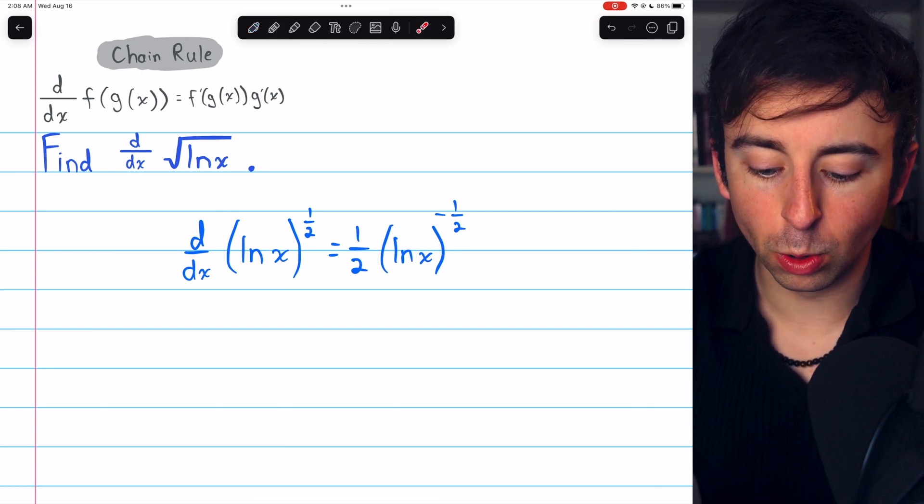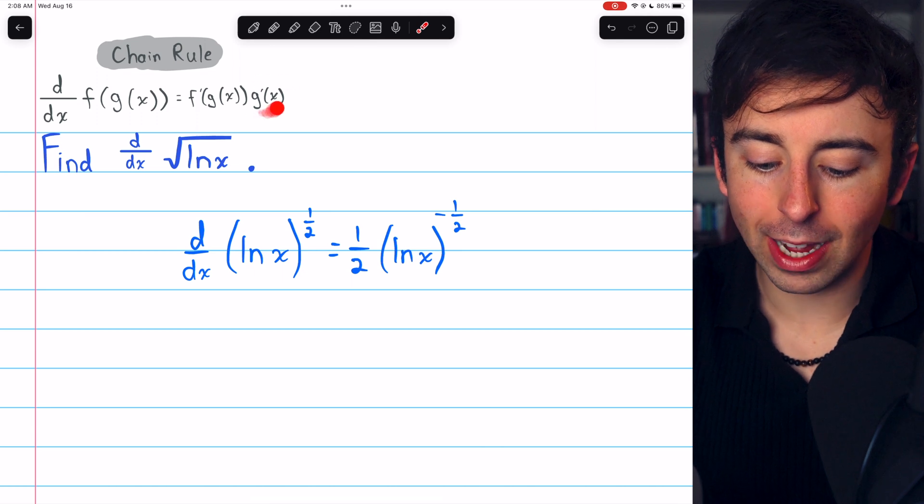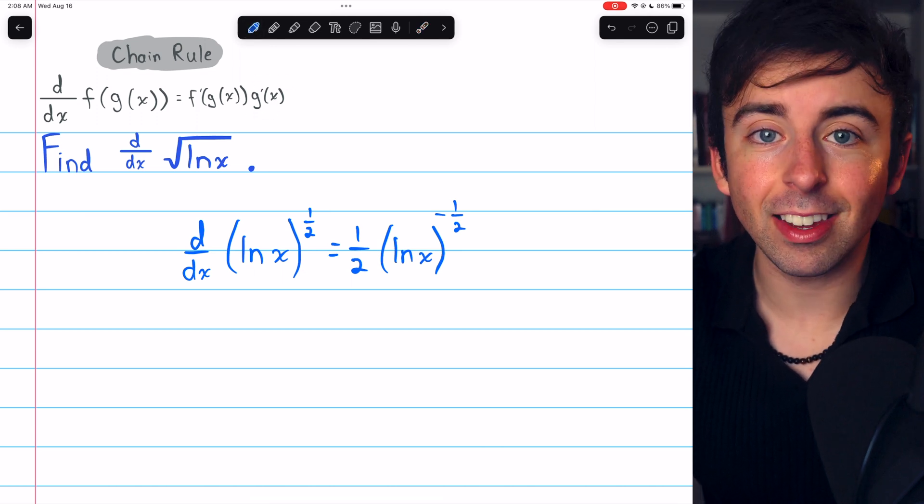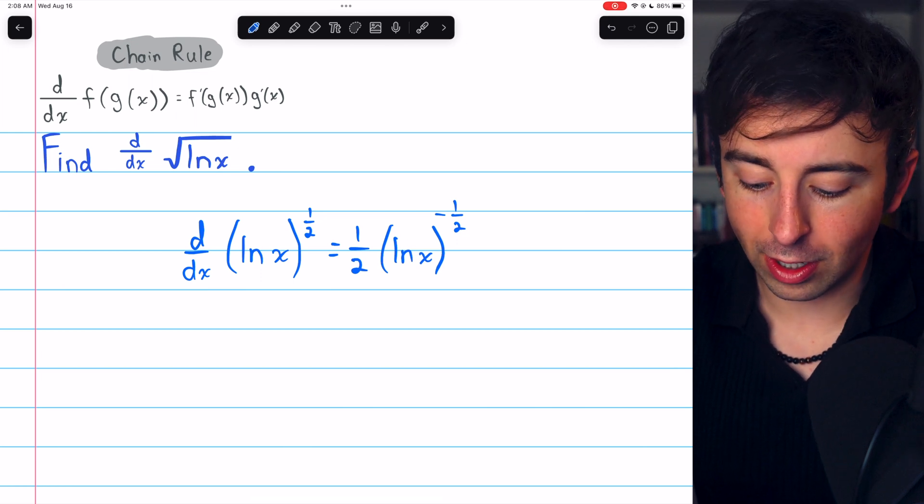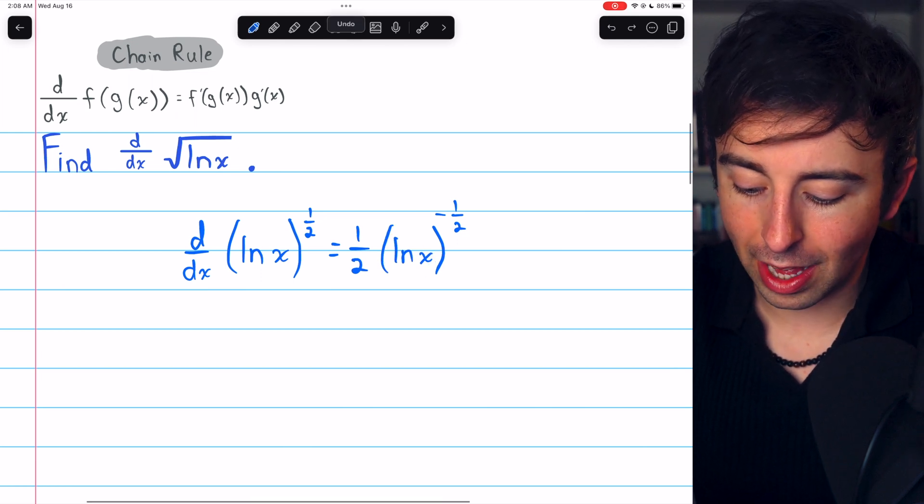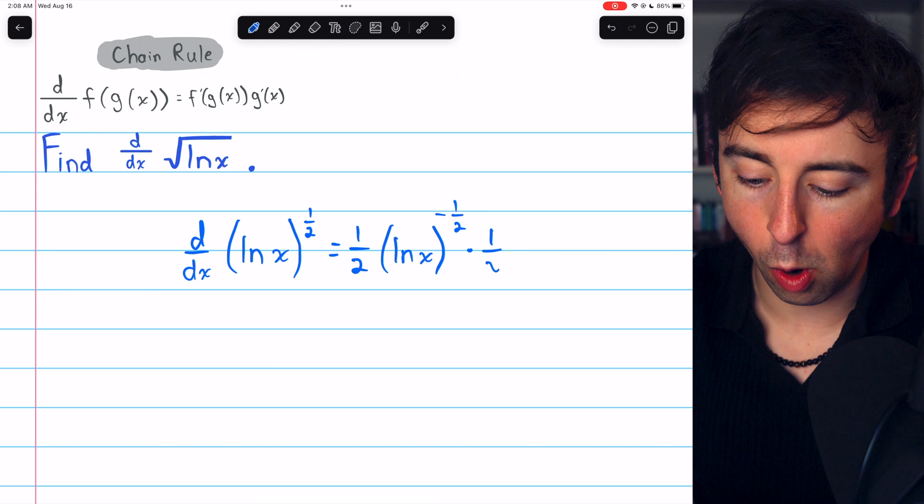The last part of the chain rule is just to multiply by g prime of x, the derivative of the inside function. The inside function is ln x, and the derivative of ln x is just 1 over x.